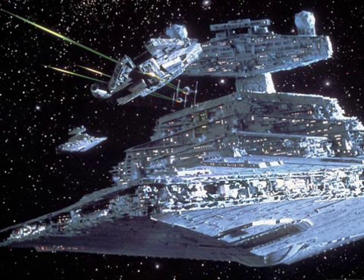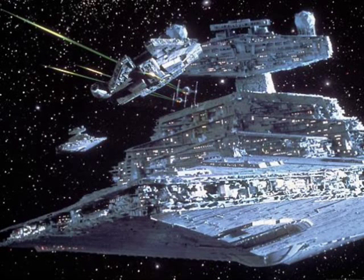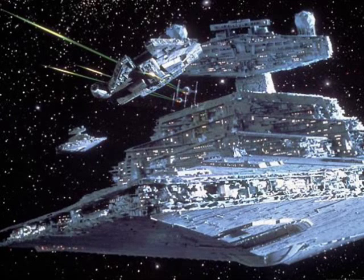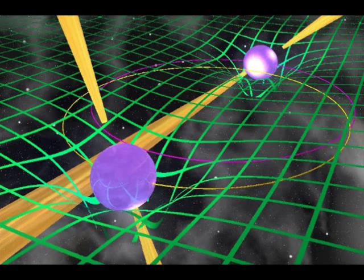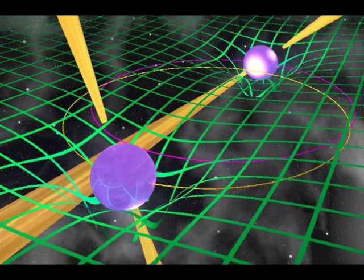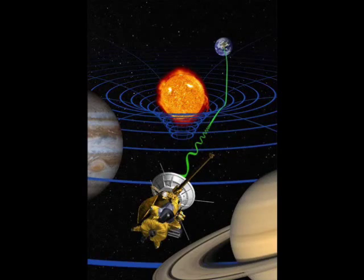To put the theory of relativity into the simplest terms possible, you need to imagine a spaceship travelling through space at around the speed of light. As the ship moves through space, it creates a dimple or bump in space itself. The faster the spaceship goes, the more space and time is bent around it, effectively slowing down time and shortening length. This also explains how gravity works — the bigger the object, the bigger the bump in space it creates, which causes objects to move towards it.